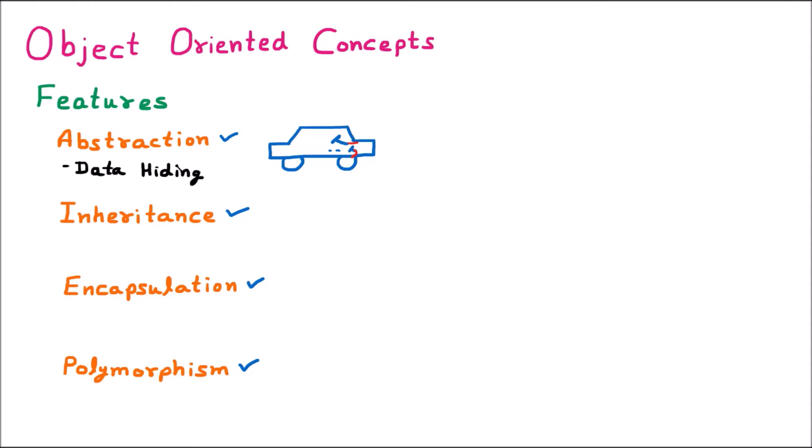In object-oriented programming languages like C++, .NET, and Java, we have the feature of abstraction. We use the keywords public, private, and protected. With the help of these, we can provide only the required data to the user — only the essential data is shown. So the definition of abstraction is: showing the essential data and hiding the unnecessary data.